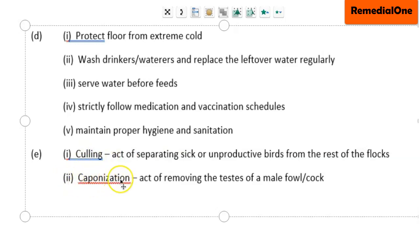Part ii: Caponization. It is the act of removing the testes of a male fowl or cock. That is the act of sterilizing the male cock so that it becomes sexually inactive. So that process is called caponization.